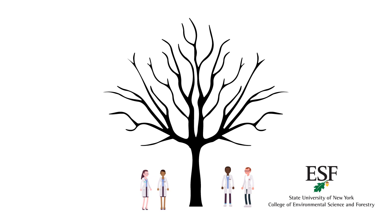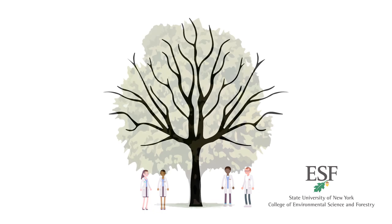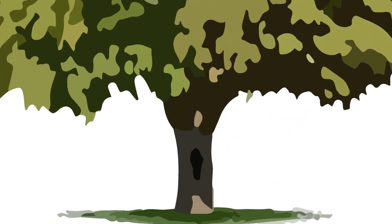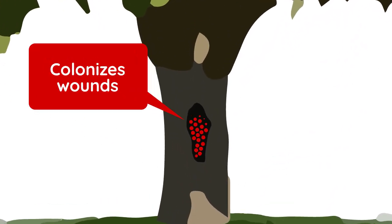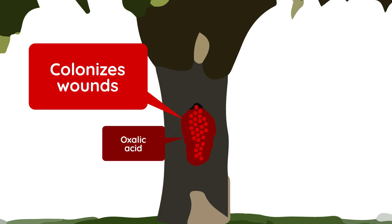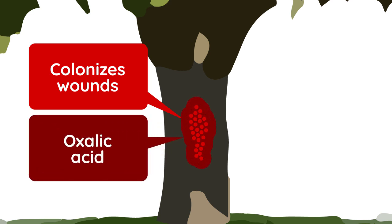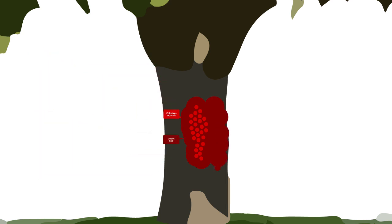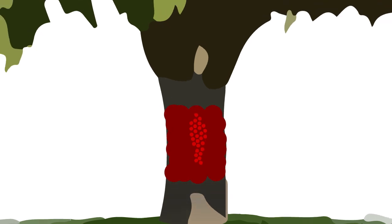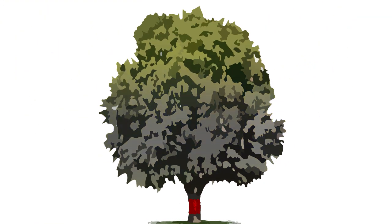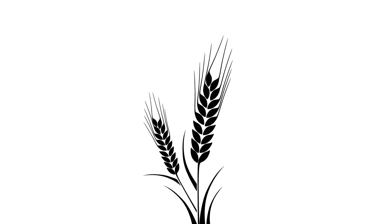Here's how it works: the chestnut blight fungus colonizes wounds in the tree and then produces oxalic acid, a toxin that kills the tree's cells. The fungus, which eats the dead tissue, spreads and forms cankers that eventually girdle the tree. Circulation is cut off and everything above the canker dies. Other plant pathogens also use oxalic acid to attack their host plants.